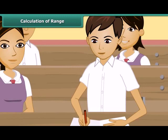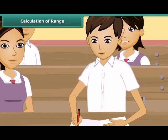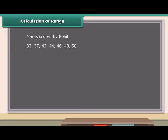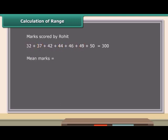Rohit is an intelligent and studious boy in the class. He gave his maths test 7 times to improve his marks. The data shown here displays the marks scored by Rohit. Can you calculate the mean test marks of Rohit? Let us first add up the marks — the sum is 300. We know he gave the maths test 7 times. So the mean marks of Rohit are equal to 300 divided by 7, which equals 42.86.